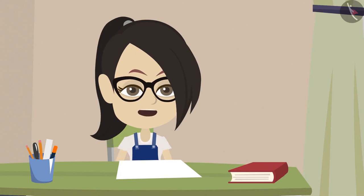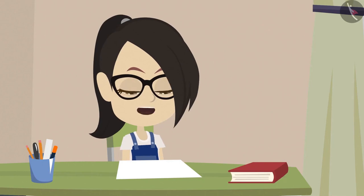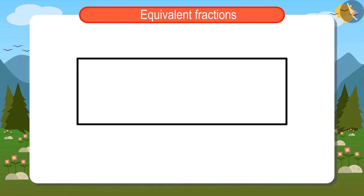To understand this concept well, we can draw its explanation. Like one halves means one of the two equal parts. So I will make a rectangle and divide it into two. This is one halves of it.